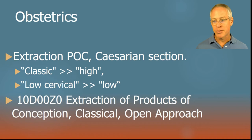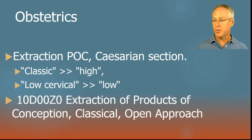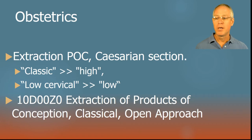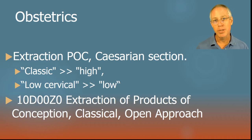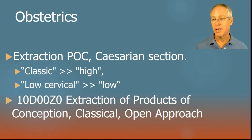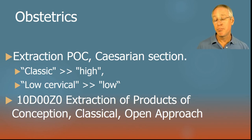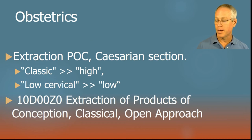Obstetrics: slightly more interesting but still housekeeping. For extraction of products of conception — a cesarean section — we're changing terminology. Classic becomes high, and low cervical becomes low. Important: this refers to the incision in the uterus, not the abdominal incision. Low cervical is a slight misnomer — it's really a low transverse uterine segment incision at the uterus-cervix junction. A classic incision is a high vertical uterine incision, rarely done today. The vast majority of C-sections today are low uterine segment — just think low. If the physician documents classic, that maps to high.